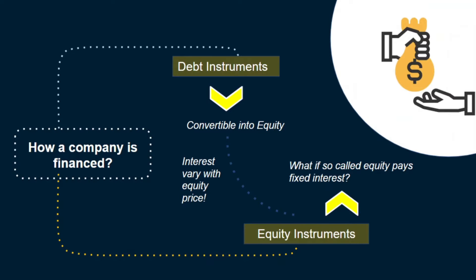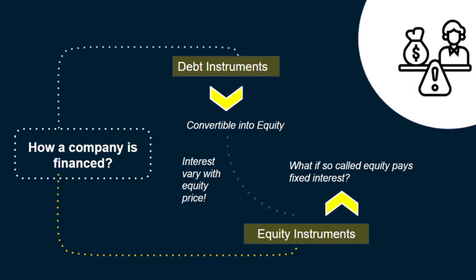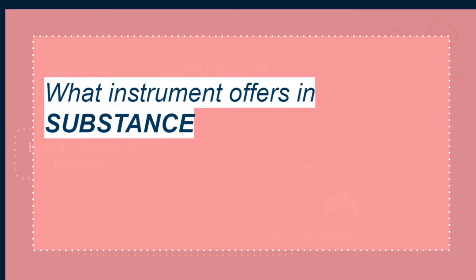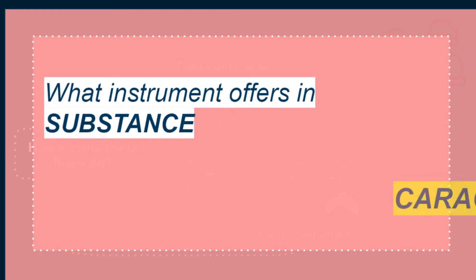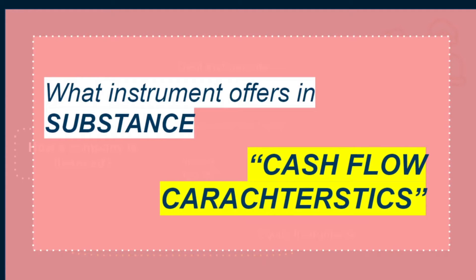This is not solely payment of principal and interest — or who knows, at some point a preference share may become an SPPI instrument. It's more important to see through these mere labels of debt and equity instruments into what these instruments actually offer in substance. That's exactly what we're going to do in this video by understanding the IFRS 9 cash flow characteristics test.